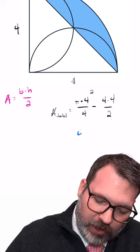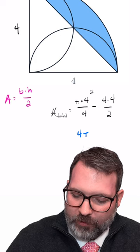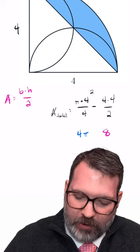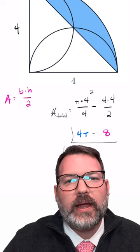Pi times four squared over four makes four pi, four times four over four makes eight, and so the area we're interested in is four pi minus eight.